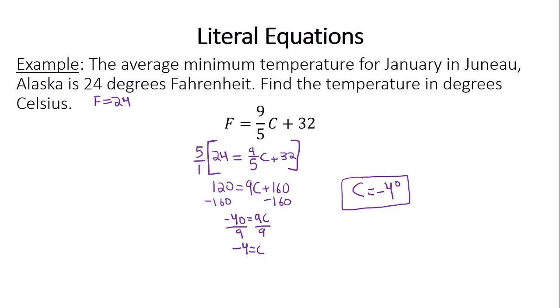I want you to look at the steps I did here. First thing I did was multiply by 5 to get rid of the fraction. Isolate the C by taking away the constant 160 from both sides. Then I did a division step. So we got rid of the fractions, subtracted, and we divided.